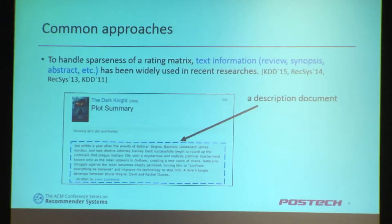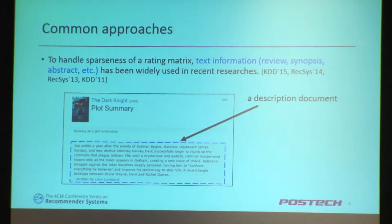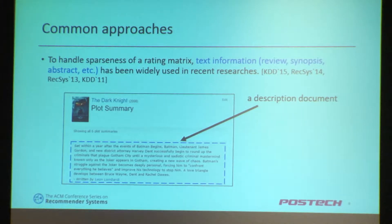To handle this sparsity problem, many authors have found benefit in incorporating matrix factorization with textual information such as reviews, synopses, and abstracts — actual descriptions of many items.